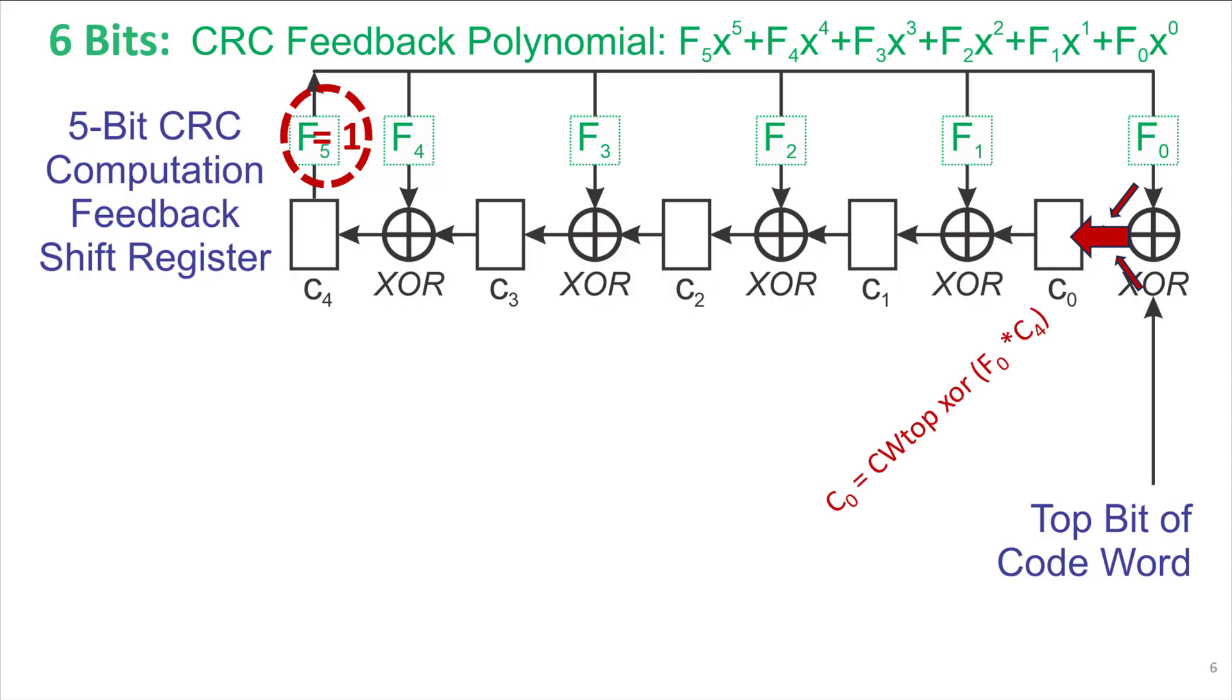What we have is the codeword top bit XORed with f0 times c4. In Boolean algebra, multiplication is an AND function. So what this is really saying is if f0 is 1, then the value of c4 gets put into the XOR gate. And if the value of f0 is 0, then nothing happens and it's just the codeword top bit that gets propagated.